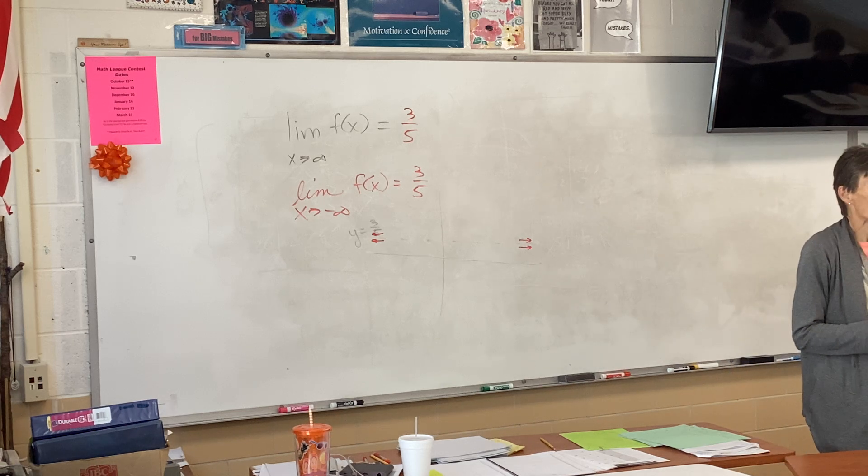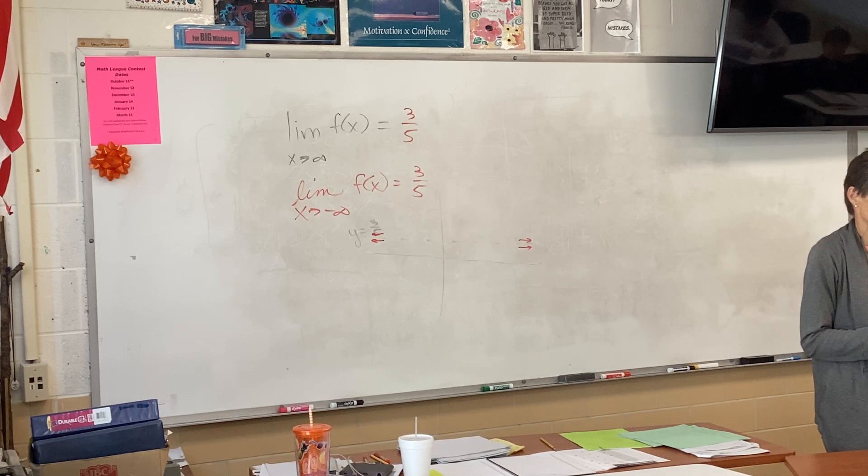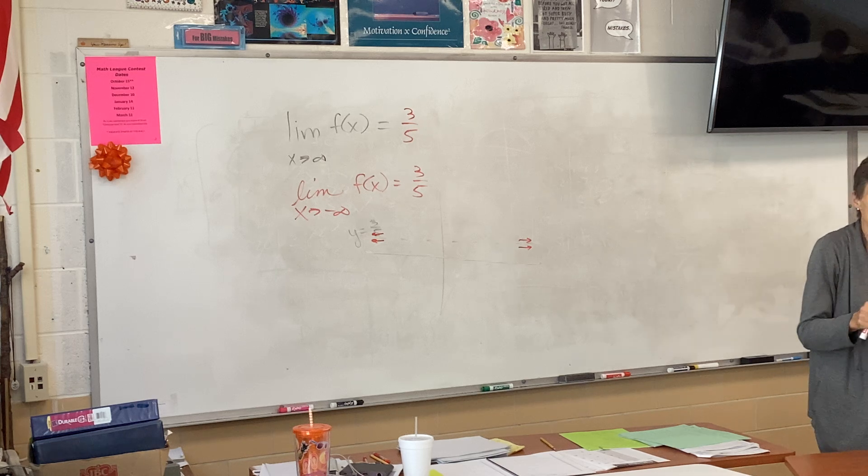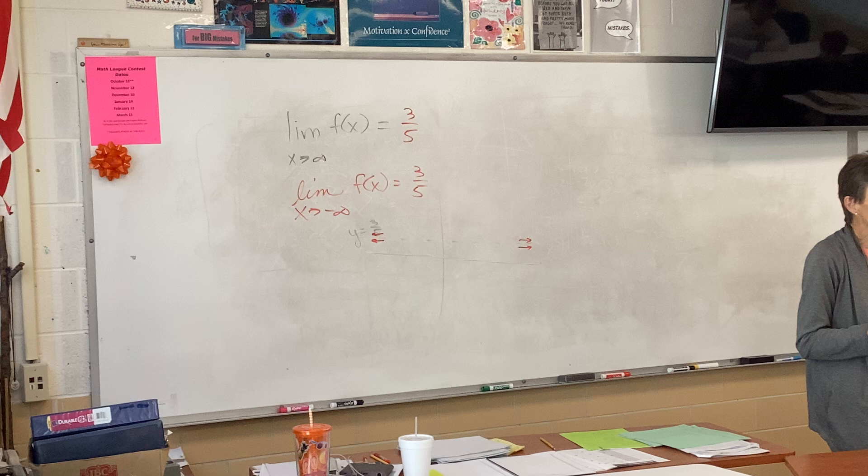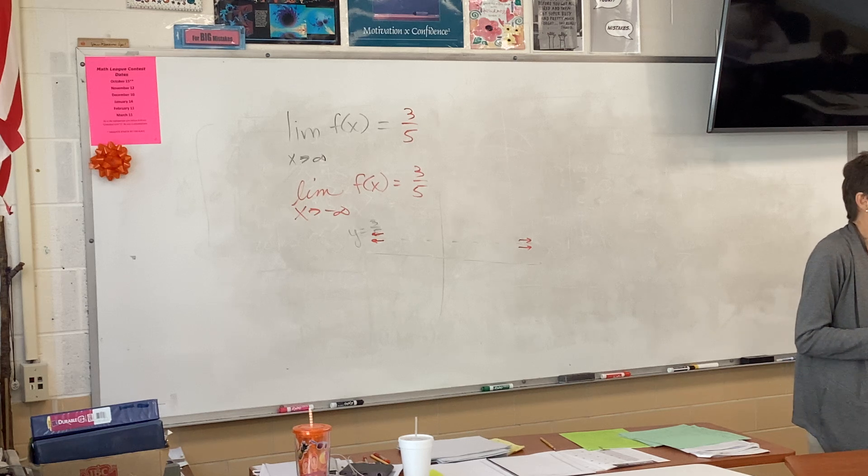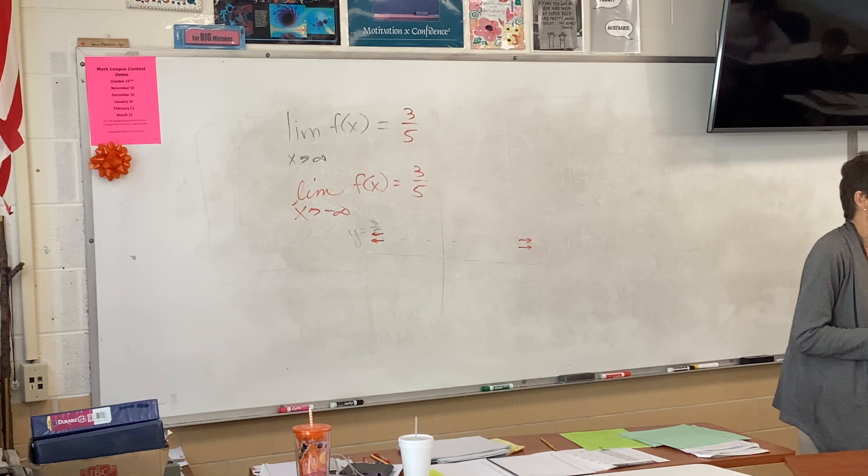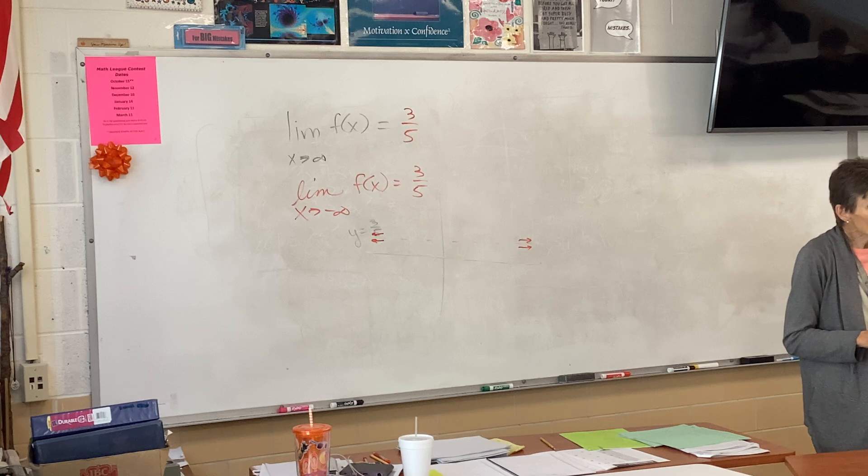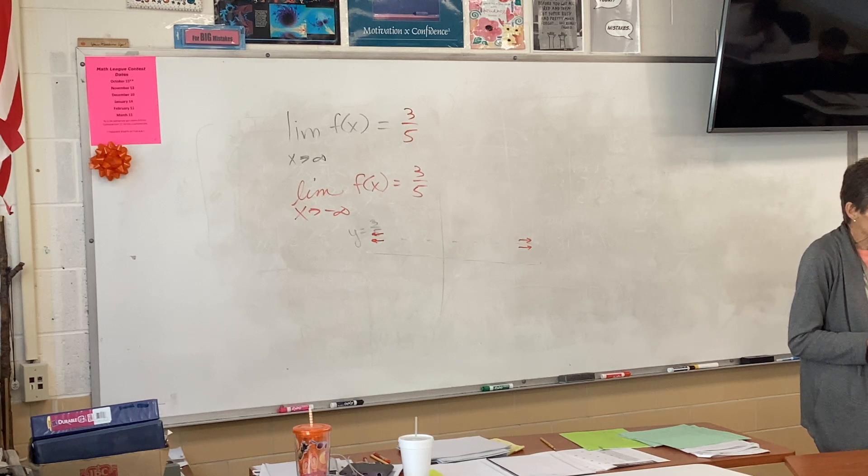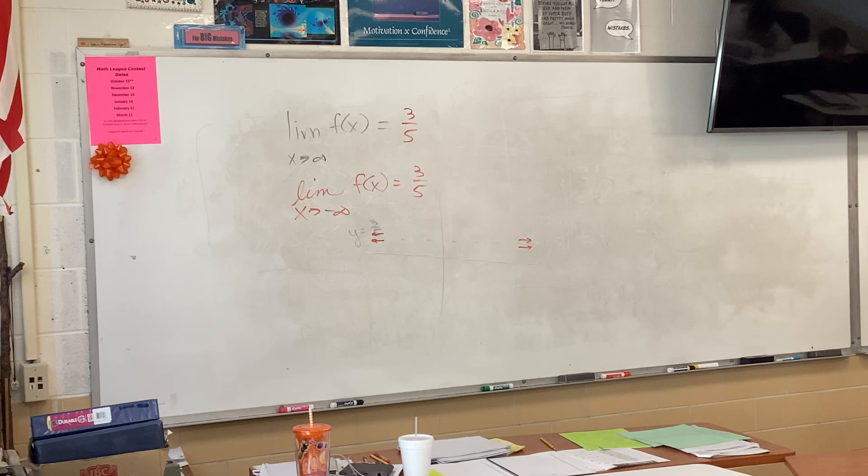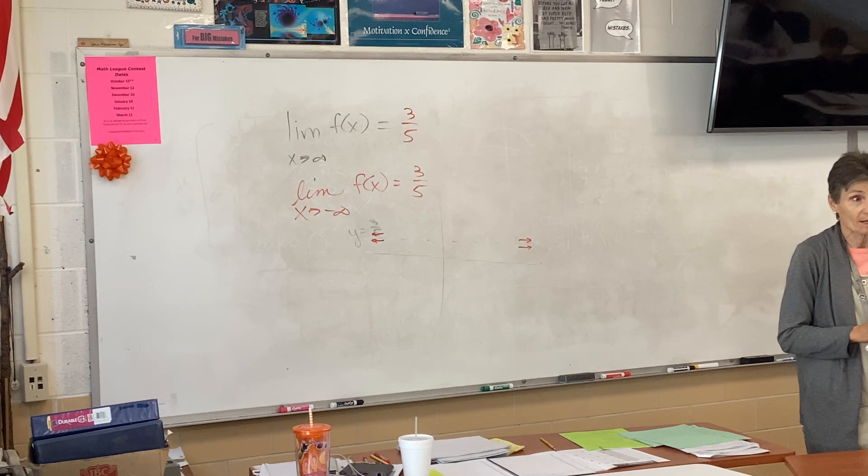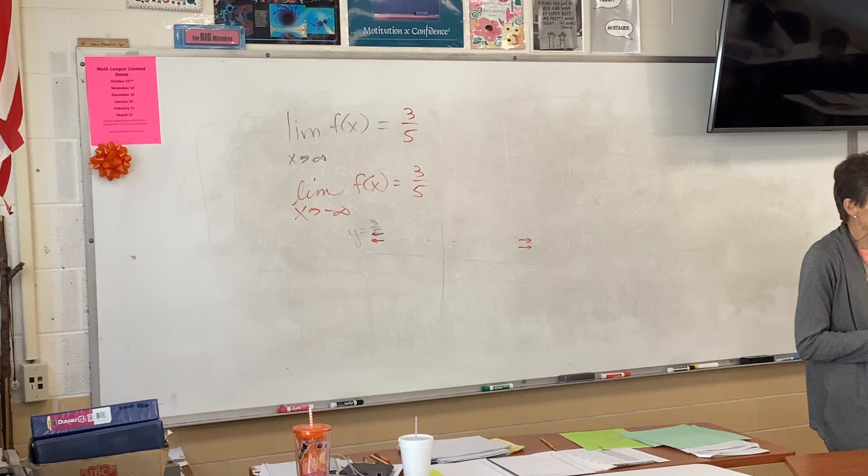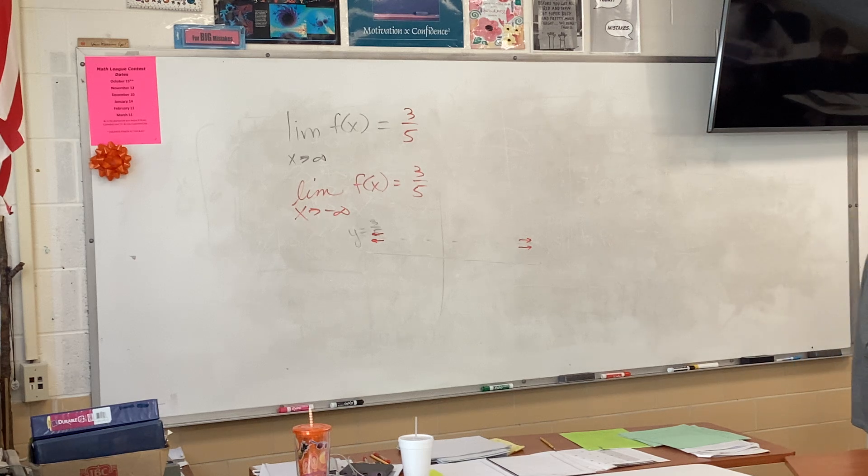Now, asymptotes can be any shapes. They don't have to be lines. We're going to use the line to start with. But you can have a parabola shape as an asymptote. You can have a cubic shape as an asymptote. If the power on the top is just one bigger than the power on the bottom, so x squared over x, x cubed over x squared, you will have a slant asymptote.